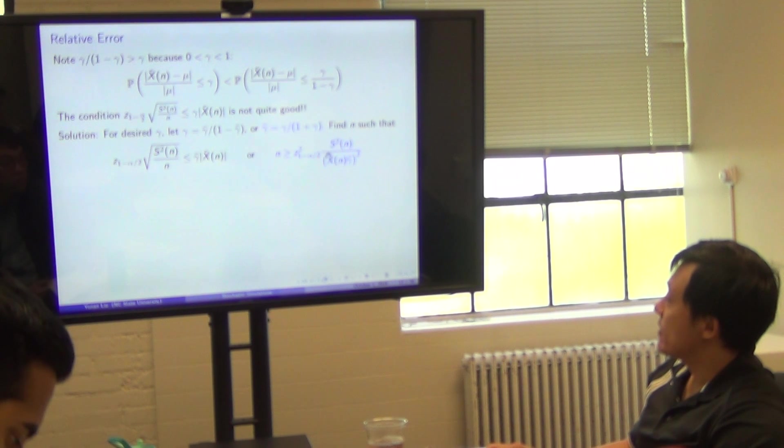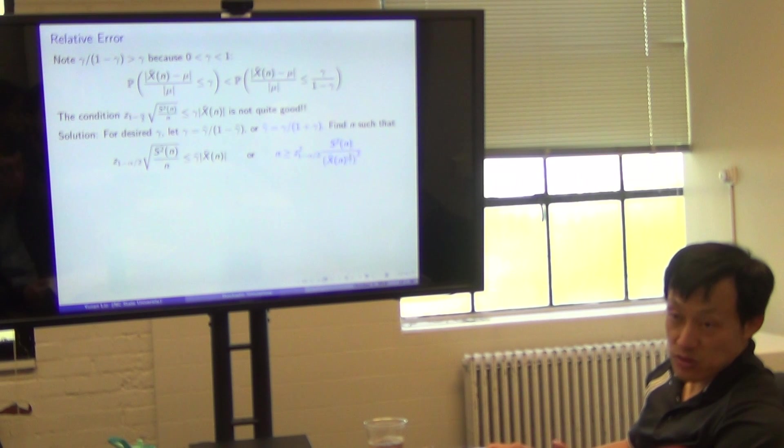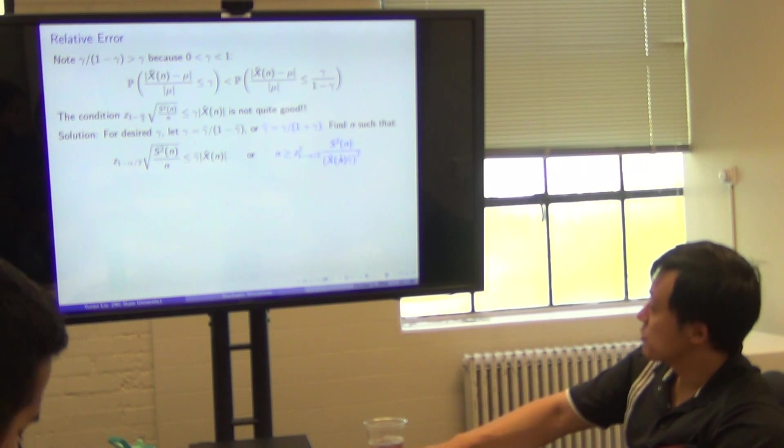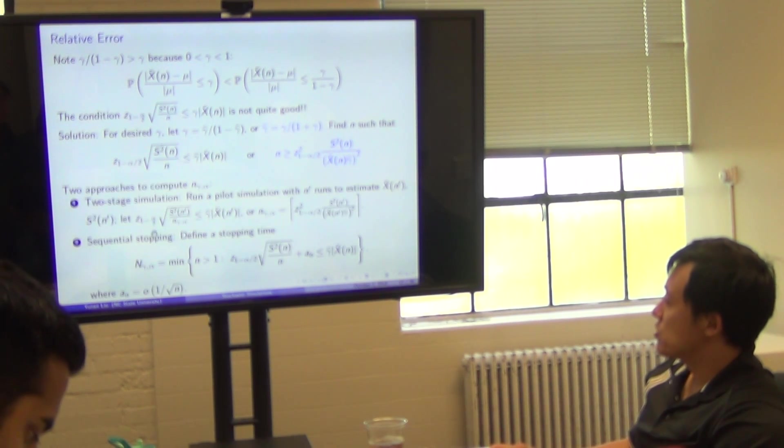Now we have x bar times gamma squared, except that gamma is calibrated, recalibrated. So you could do two-stage approximations, two-stage simulations to run pattern study to estimate the right-hand side.